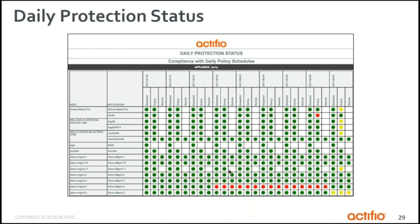It uses three color values, as you can see on the screen here. Green is pretty straightforward — that indicates that there were successful jobs, that we met what we were supposed to do. So in this case, this Oracle mass prod system, we accomplished all of the snapshots we were supposed to on that day and we deduped everything just like we should. It's telling me I met my SLAs. Compliance with what was scheduled did occur.